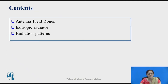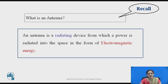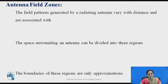These are the contents. Before going to start the basics of an antenna, you can recall what is the meaning of an antenna. You can pause the video here for a second and recall that. An antenna is a radiating device from which power is radiated into free space in the form of electromagnetic energy. These are the different field zones related to the antenna.